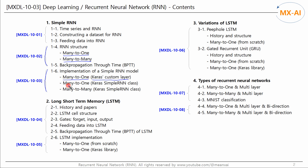Next, let's implement a many-to-one RNN model using Keras' SimpleRNN class, which makes it easy to implement RNN models. Finally, let's implement a many-to-many RNN model using Keras' SimpleRNN class.